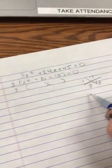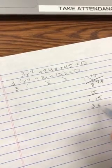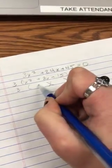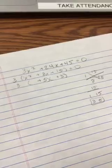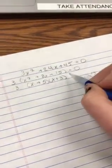So I need factors of 15 that add to 8. So I have 1 and 15, 3 and 5. And there they are. 5 plus 3 is 8. So I have plus 5 plus 3 equals 0.